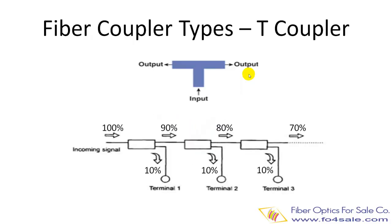The other type is called T-coupler. T-coupler basically functions the same as Y-coupler. T-couplers can be cascaded to connect multiple terminals on the network, as shown in the bottom picture. The split ratio between two outputs should be 10/90% or 20/80%, in order to have enough power left for the next terminal in the link.